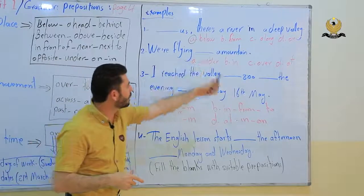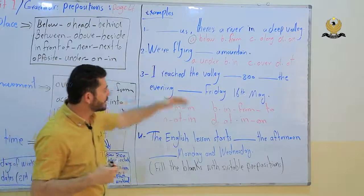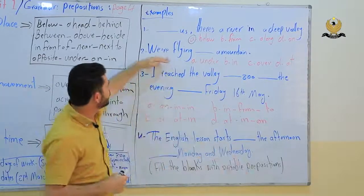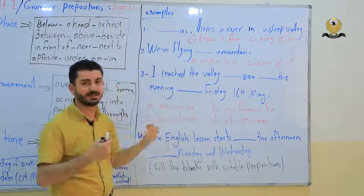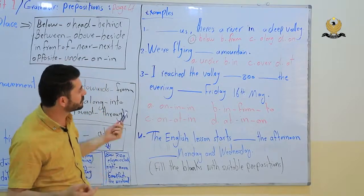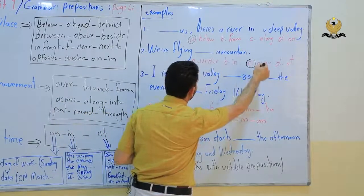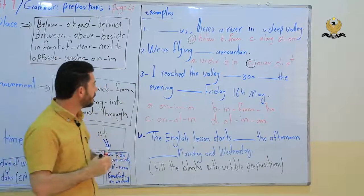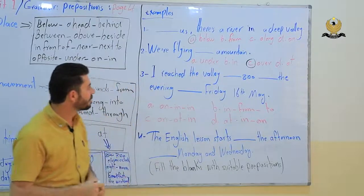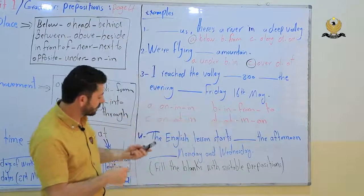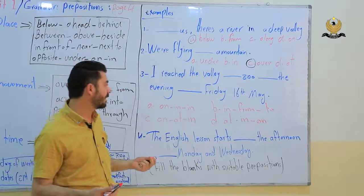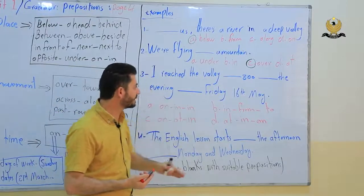Number 2: We are flying over a mountain. The options are: A in, B over, C at. We are flying, which is movement, so we use a preposition of movement. We are flying over a mountain.